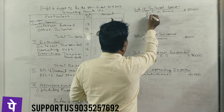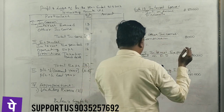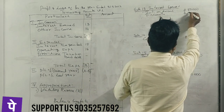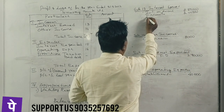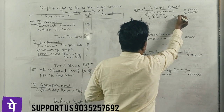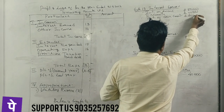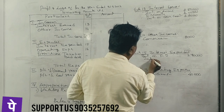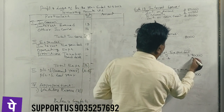Discount on bills — there are no adjustments. Interest on cash credits: $2,20,000. Interest on current account: $40,000.